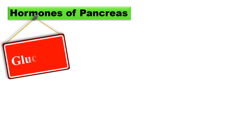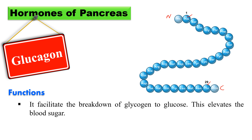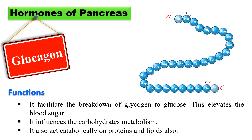Glucagon is a peptide hormone made up of 29 amino acids arranged in a linear fashion with histidine as the N-terminal and threonine as the C-terminal (the 29th amino acid). It does not contain cysteine but contains sulfur in the form of methionine. Its function involves breakdown of glycogen to glucose, increasing blood sugar levels, influencing carbohydrate metabolism, and acting catabolically on proteins and lipids.